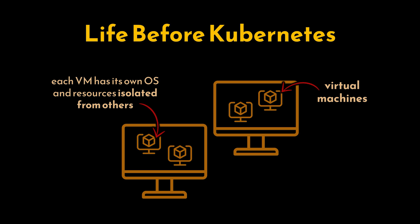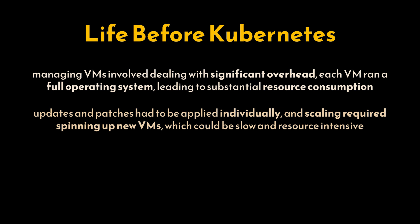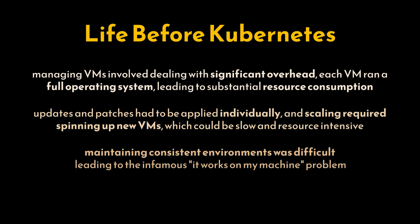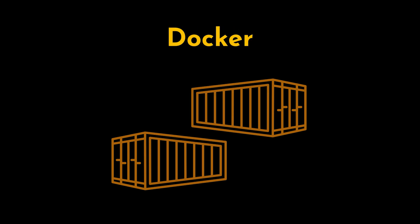Managing VMs still had its challenges. Each VM ran a full operating system, leading to substantial resource consumption. Updates and patches had to be applied individually, and scaling required spinning up new VMs, which could be slow and resource intensive. Maintaining consistent environments across development, testing, and production was difficult, leading to the infamous 'it works on my machine' problem. As applications grew and the need for rapid, reliable deployments increased, these traditional methods became bottlenecks.